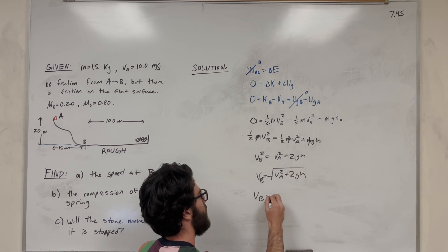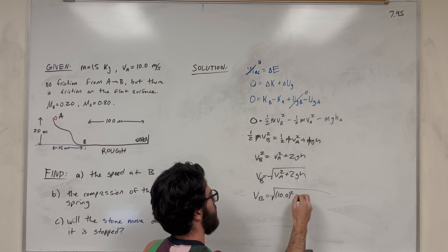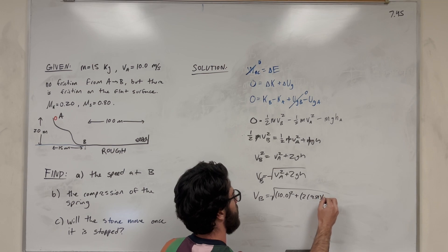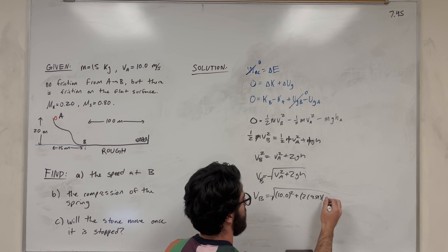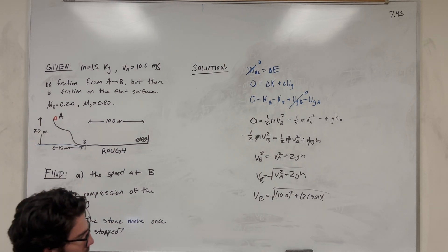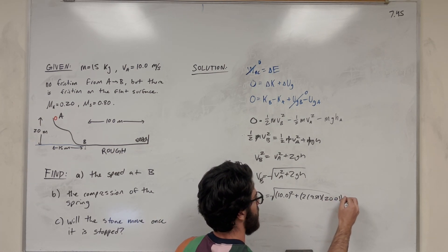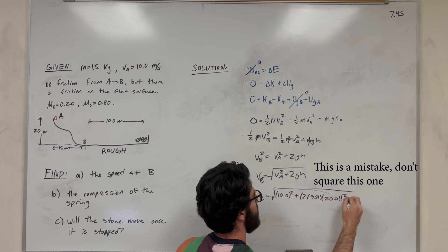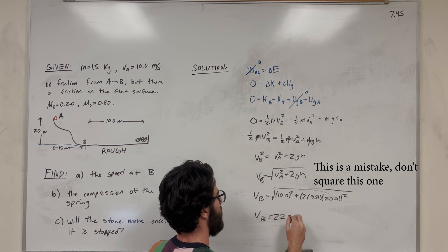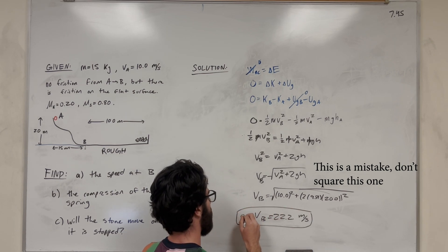Velocity of B equals the square root of velocity of A squared plus two times gravity times height — that's the vertical distance from B to A, which is 20 meters. So it's the square root of 10 squared plus two times 9.81 times 20. Velocity B equals 22.2 meters per second. That's our answer to part A.